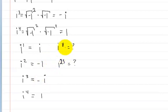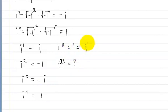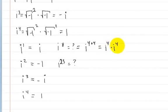For example, what is i to the eighth power? An easy way is to say i to the eighth is the same as i to the 4 plus 4, which can be rewritten as i to the fourth times i to the fourth. We know i to the fourth equals 1, so this equals 1.